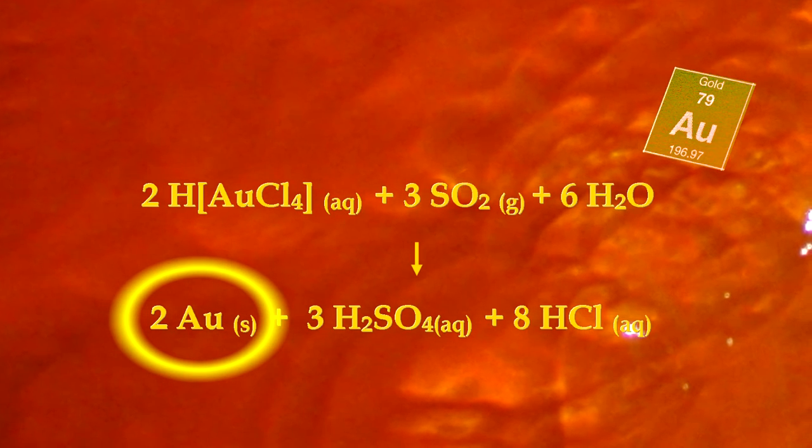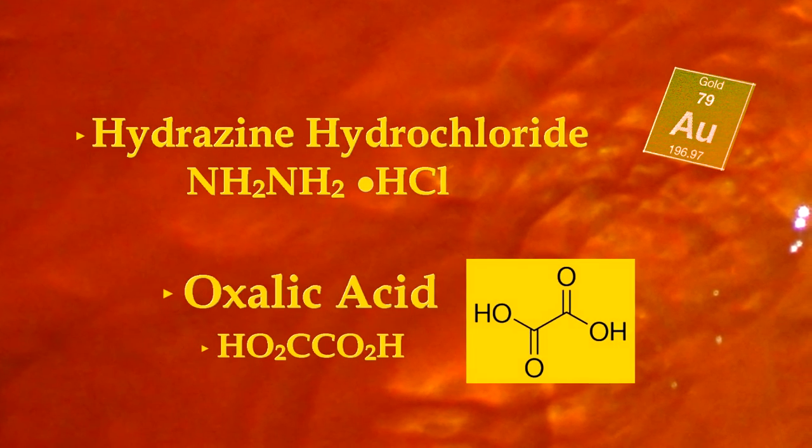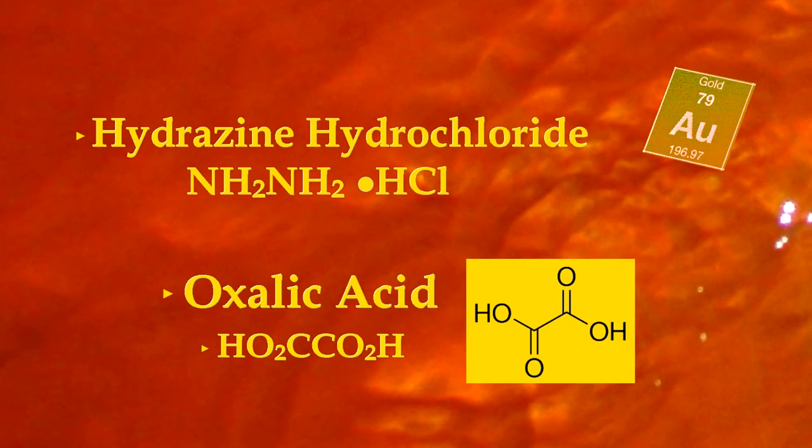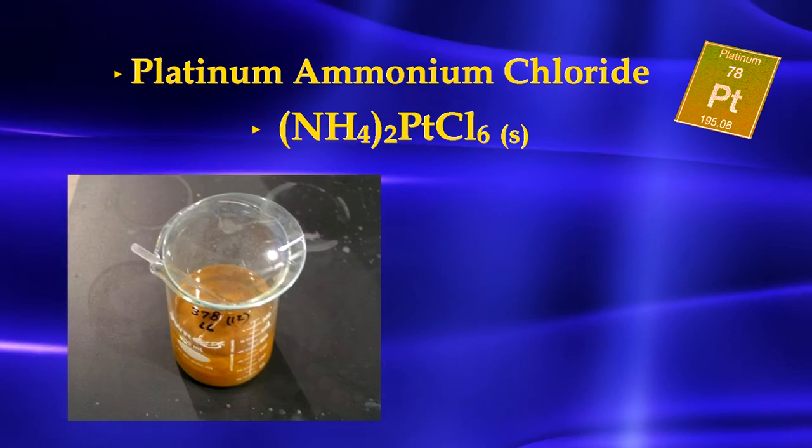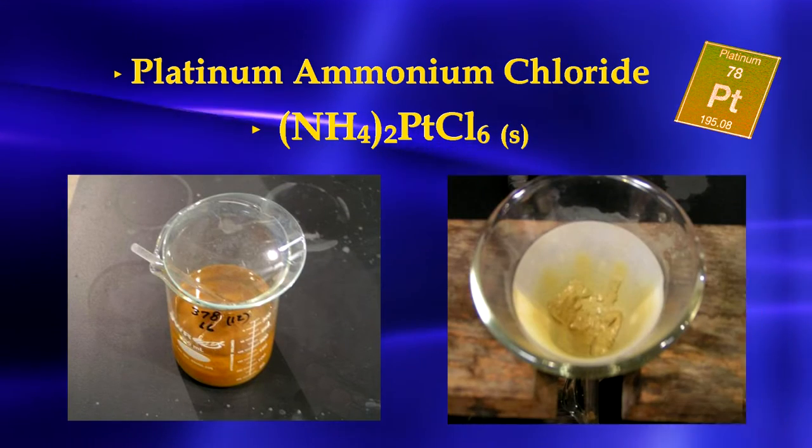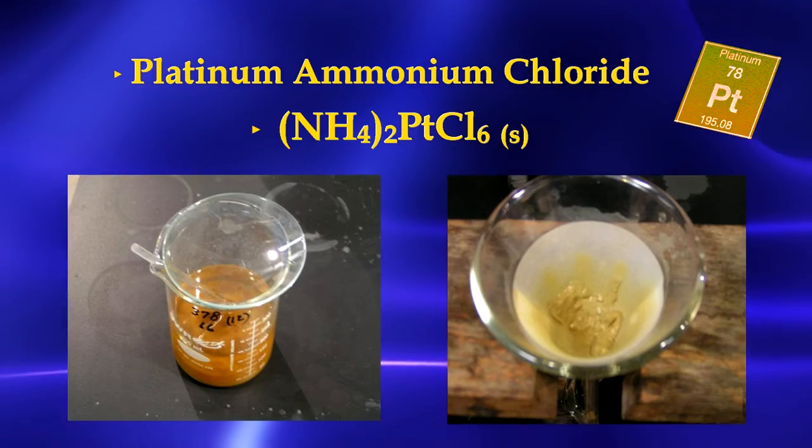Other reductants used for gold precipitation include hydrazine hydrochloride and oxalic acid. Platinum is typically precipitated with ammonia and hydrochloric acid to produce a platinum ammonium chloride, which is a yellow crystalline compound.